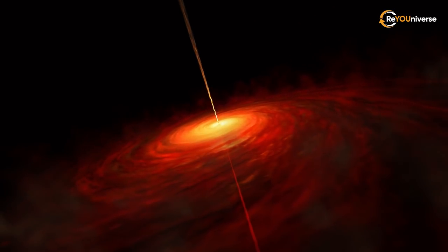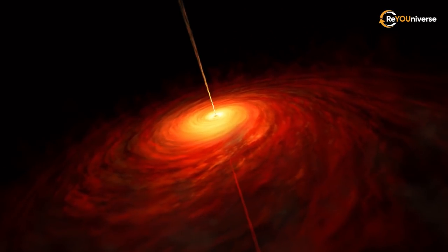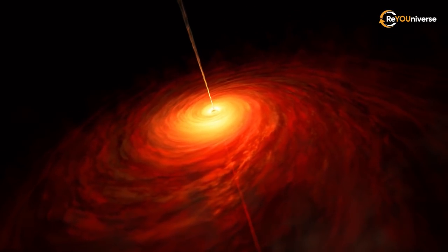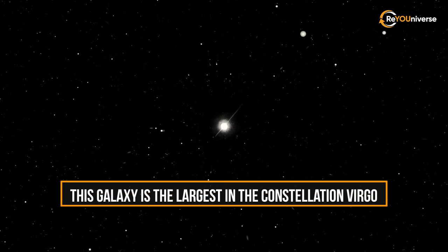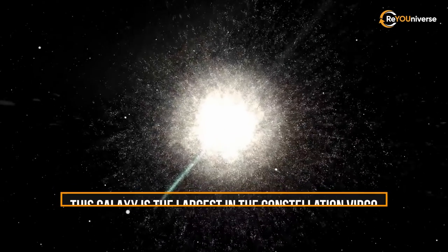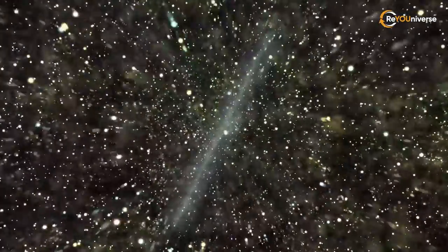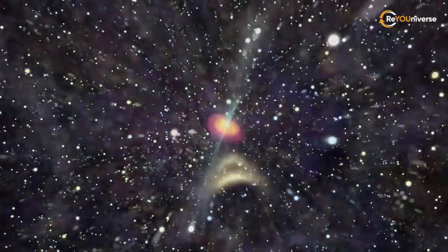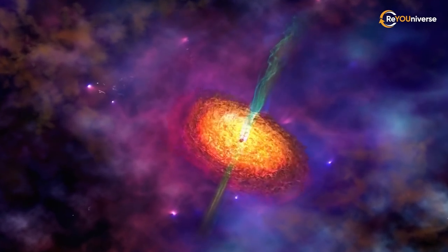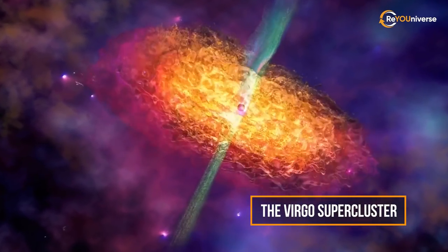If we held an intergalactic competition, then M87 would take prizes in several nominations at once. This galaxy is the largest in the constellation Virgo, the second brightest in the cluster of the same name, and one of the most massive in the local supercluster of galaxies, which is also called the Virgo supercluster.